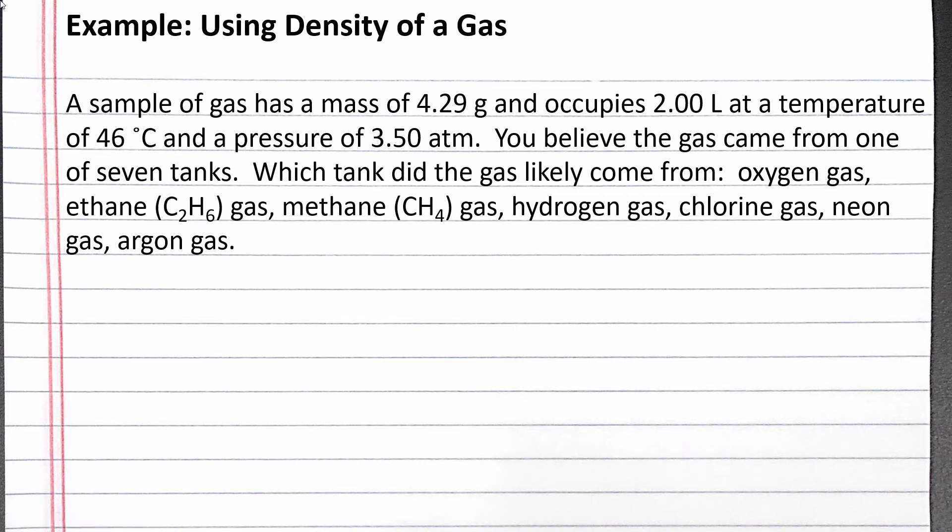In this example, we use the density of a gas to determine the likely identity of a gas. A sample of gas has a mass of 4.29 grams and occupies 2.00 liters at a temperature of 46 degrees Celsius and a pressure of 3.50 atmospheres. You believe the gas came from one of seven tanks.